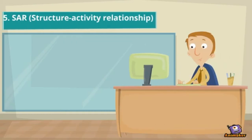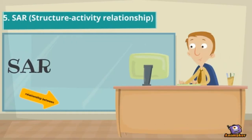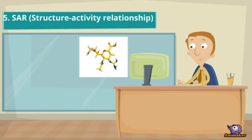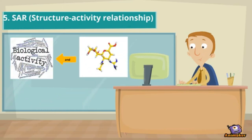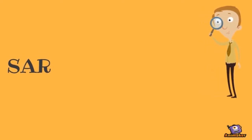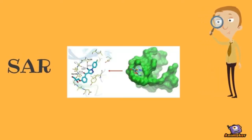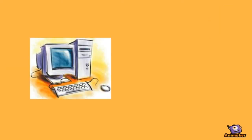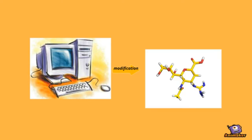Structure-Activity Relationship (SAR) is the relationship between the chemical or 3D structures of molecules and their biological activity. SAR analysis allows the determination of the chemical groups responsible for generating target biological effects on organisms, enabling the modification of the effects or potential of bioactive compounds.